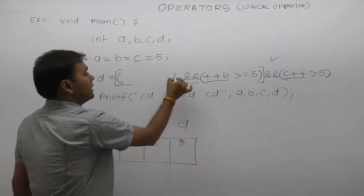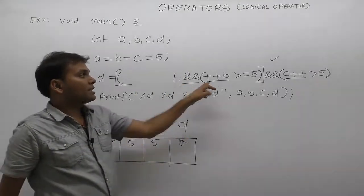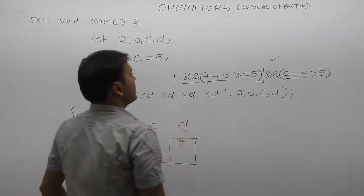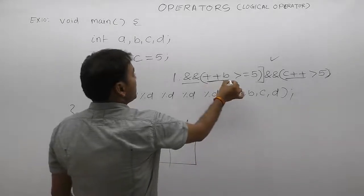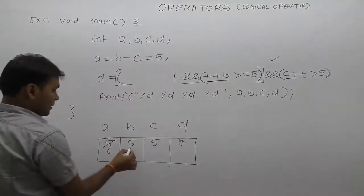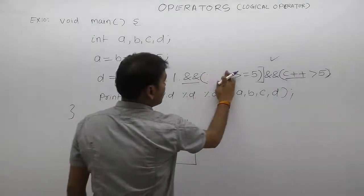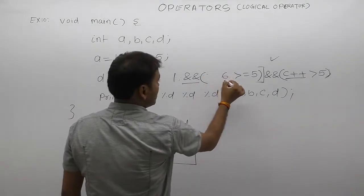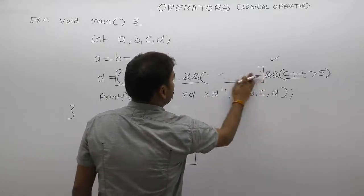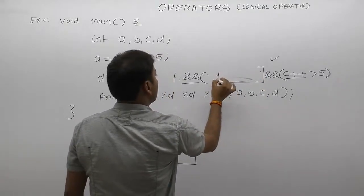True means 1. First condition tested. Second condition - what is performed? Pre-increment of b. Now b becomes 6, then replacement. Replace value of b: 6 greater than 5 - condition is again true. Condition true, true means 1.